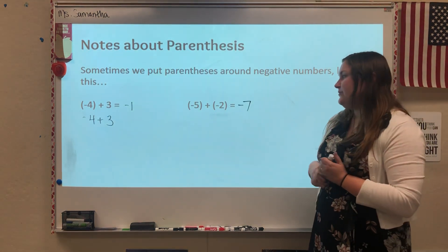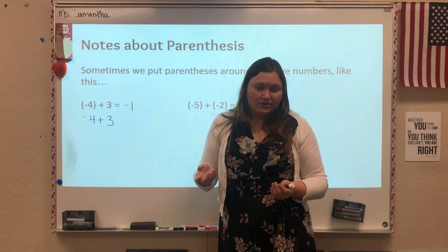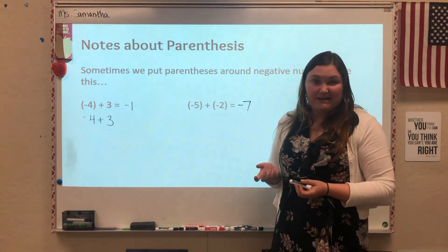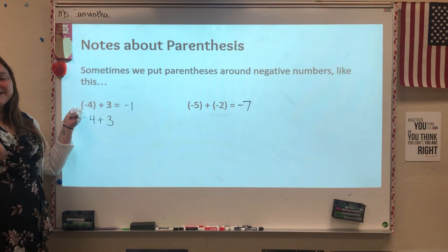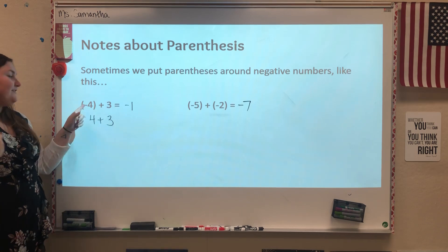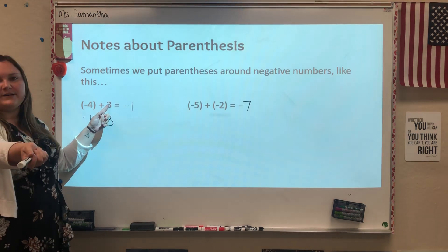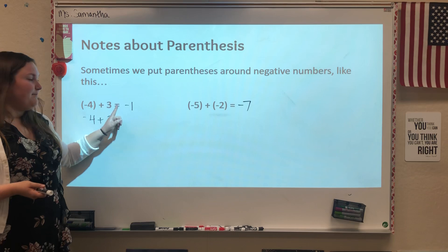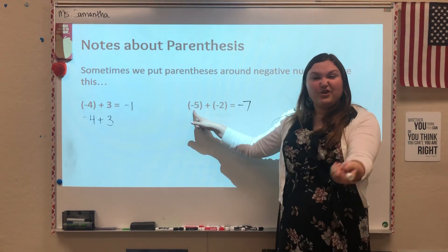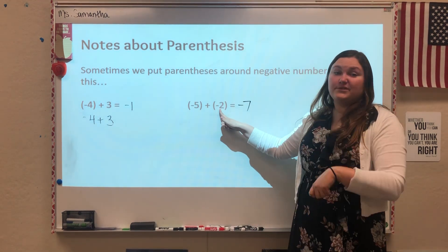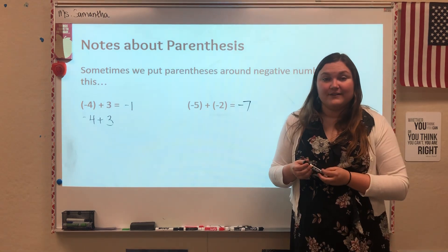Another trick students can use to confirm their answer is to change these into a real-world situation. An example some students like is money: think of negatives as money you owe and positives as money you have. If I owe you $4 and I have $3, I give you the $3 and say I still owe you $1 — so the answer is negative 1. Or: I owe you $5, I owe you another $2, so now I owe you a total of $7 — negative 7. This helps some students think about it in terms of real-world situations.